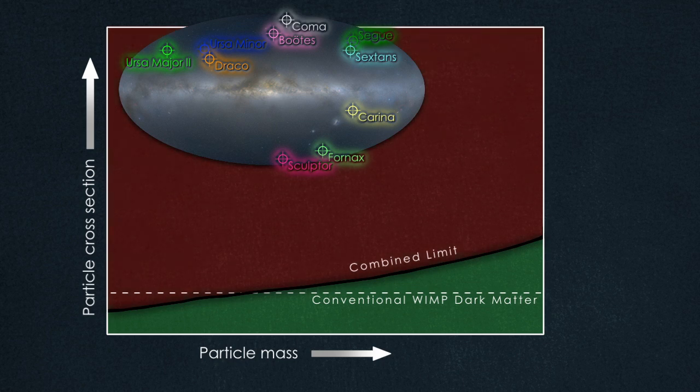This limit shrinks the box where WIMP-based dark matter may be found, and, for the first time, shows that the cosmology we know essentially eliminates some WIMP types.